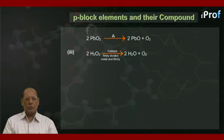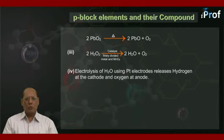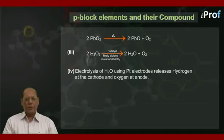Method 4 is the electrolysis of H2O using platinum electrodes. This process releases hydrogen at the cathode and oxygen at the anode.